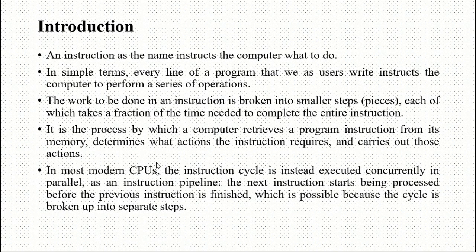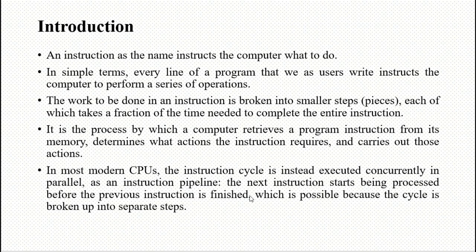In modern CPUs, the instruction cycle is executed concurrently — that means in parallel. The next instruction starts being processed before the previous instruction is finished. For example, if you have two instructions, we fetch the second one while the first is still in the execution, decode, or store stage. When the second instruction is being processed, we fetch the third one. This is called parallelism.